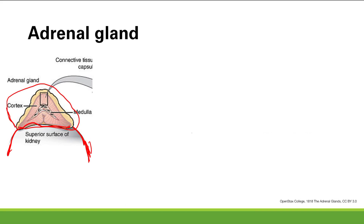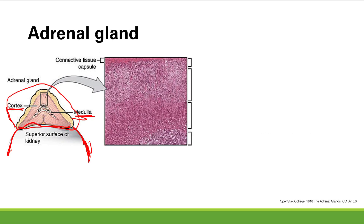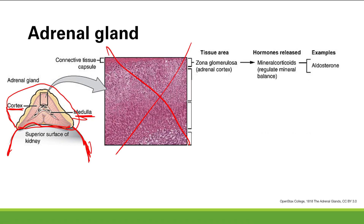The adrenal gland, like the kidney, has a cortex, which is the outer side, and a medulla, which is the inner side, as well as a capsule which you don't need to focus on. The adrenal gland has four layers total: the cortex and the medulla.